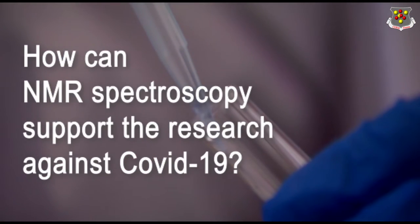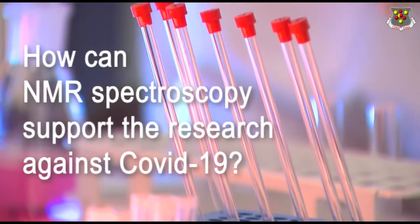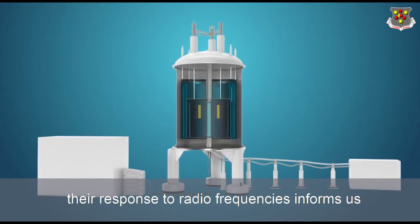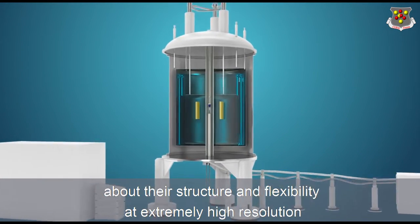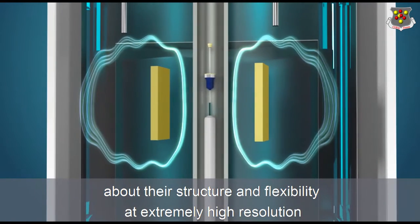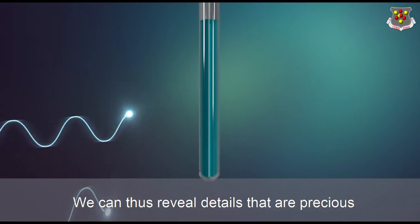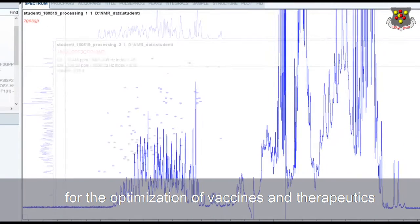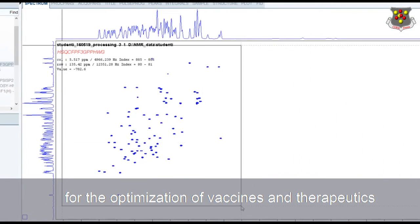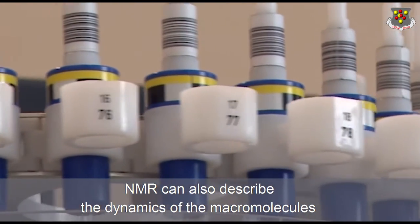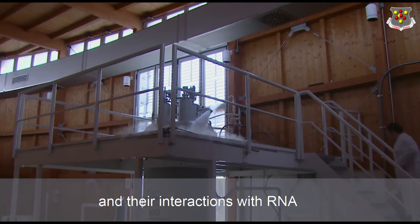How can NMR spectroscopy support the research against COVID-19? By placing the viral proteins in high magnetic fields, their response to radio frequencies informs us about their structure and flexibility at extremely high resolution. We can thus reveal details that are precious for the optimization of vaccines and therapeutics. NMR can also describe the dynamics, the macromolecules and their interactions with RNA.